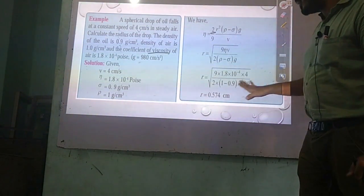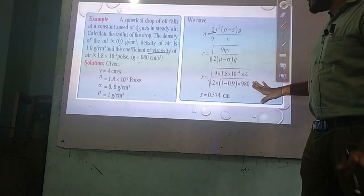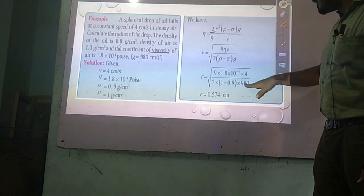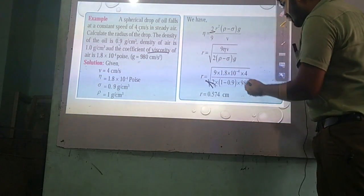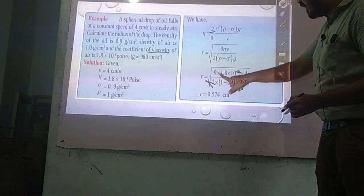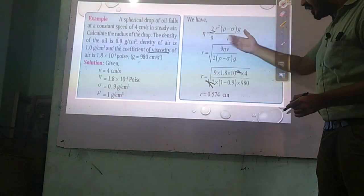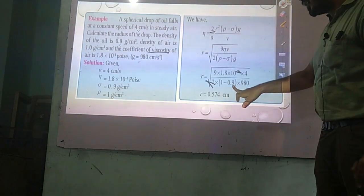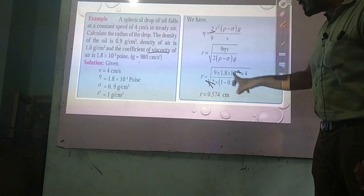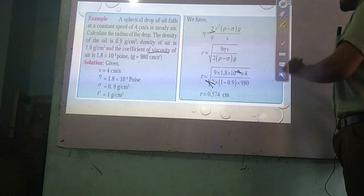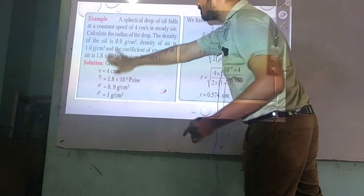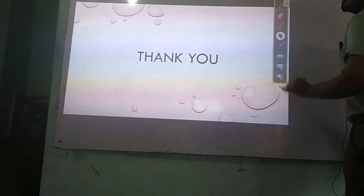Since all terms are given in CGS units, there is no need to convert. Substituting eta equals 1.8 × 10⁻⁴, v equals 4 cm/s, rho minus sigma equals 0.1, and g equals 980 cm/s², we compute: 18 × 10⁻⁴ × 4 divided by 2 × 0.1 × 980, which gives 0.1 × 980 equals 98 in the denominator. After solving, we get R square root equal to 0.5, giving the radius.